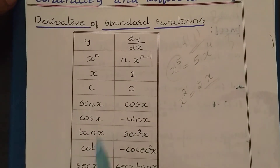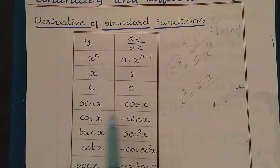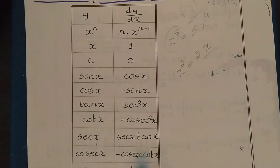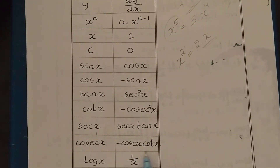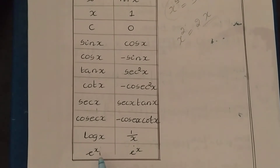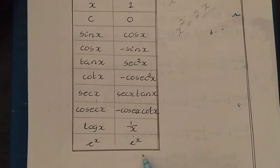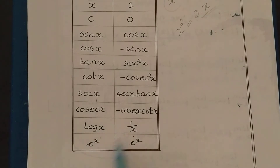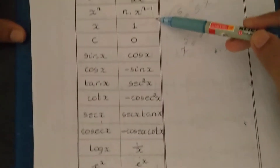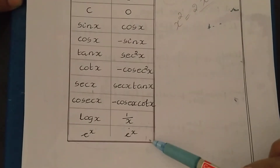Next we have trigonometric functions. The derivative of sin x is cos x; cos x is −sin x; tan x is sec²x; cot x is −cosec²x; sec x is sec x·tan x; and cosec x is −cosec x·cot x. Then, the derivative of log x is 1/x, and the derivative of e^x is e^x. These last two will be studied in coming videos.